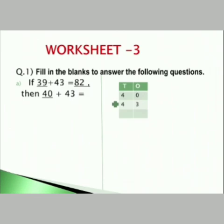Question 1. Fill in the blanks to answer the following questions. Look at question number A: if 39 plus 43 is equal to 82, then 40 plus 43 is equal to how much? If you look at 39, I have underlined the 39, and the 40 is also underlined. So if I add 1 to 39 it becomes 40, meaning the total will be 1 more. Let's check — 1's column: 0 plus 3 is 3. 10's column: 4 plus 4 is 8. So your answer is 83.